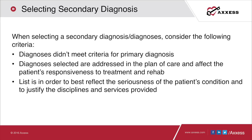For secondary diagnoses, those are conditions that did not meet criteria for primary diagnosis but are still addressed in the plan of care and/or affect the patient's responsiveness to treatment and rehab. Any diagnoses other than what's in the primary spot are sequenced based on acuity and/or coding guidance. We list those diagnoses in the best order that reflects the seriousness of the patient's condition and justifies the disciplines and services provided.